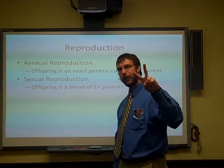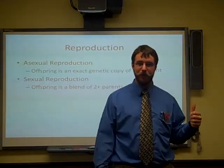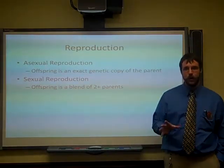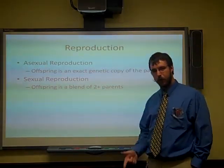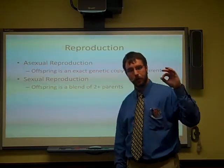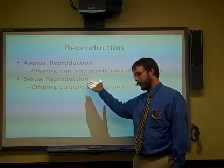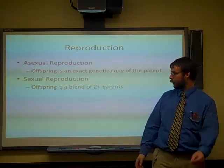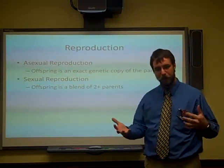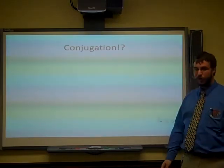There's also reproduction. There are two main types: asexual reproduction, where essentially you have a clone of the parent — bacteria and some plants like strawberries can do this by sending off runners. Or there's sexual reproduction, where you need two or more parents and the offspring is a blending of all their genes together.